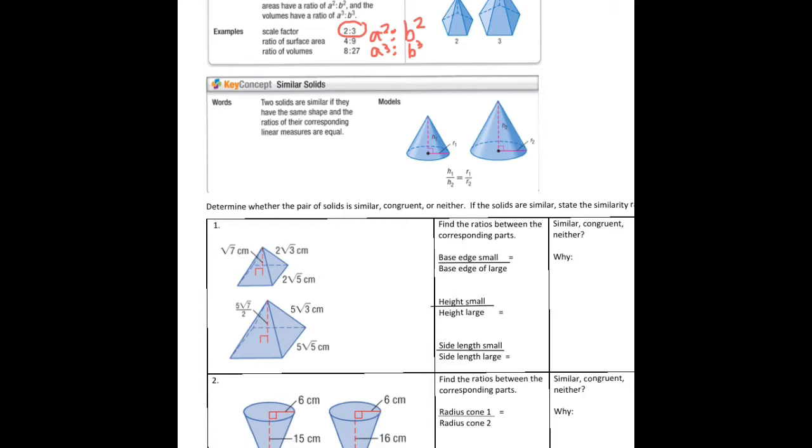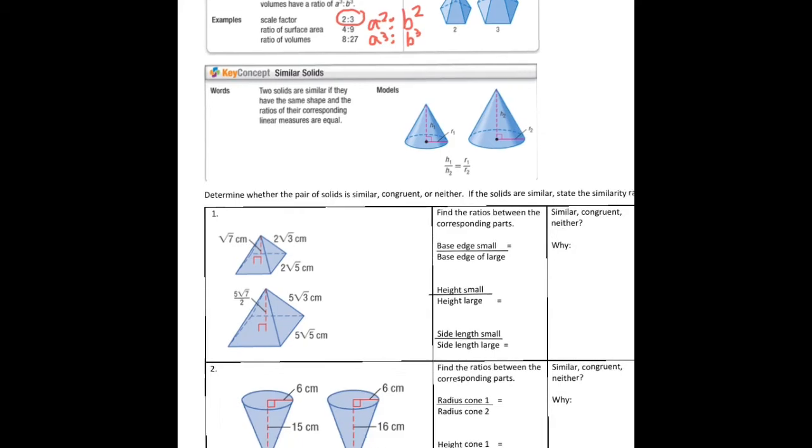So we're going to determine whether the pair of solids are similar, congruent, or neither. And if the solids are similar, we have to identify the similarity ratio. For example number one, I'm going to compare the height, so the height of the fourth is 5 to 7 to 2.